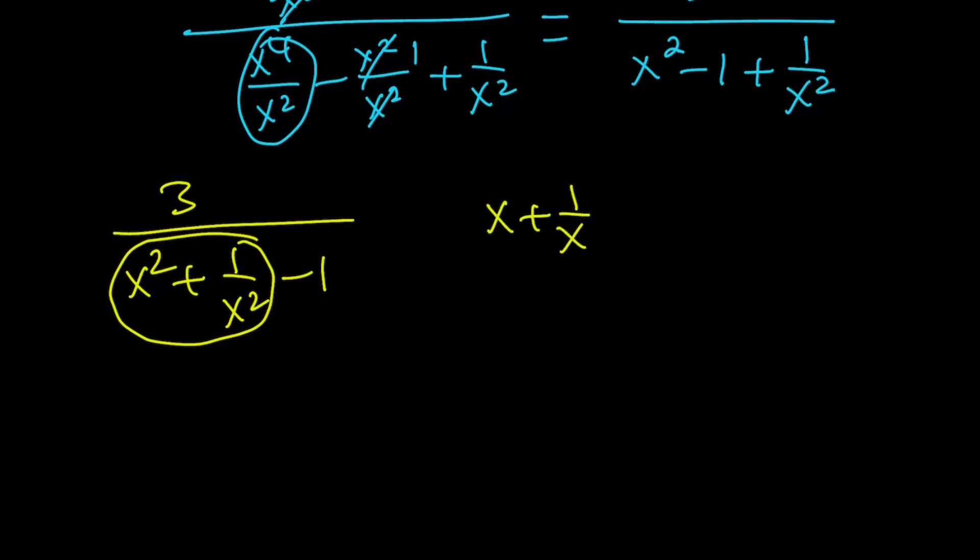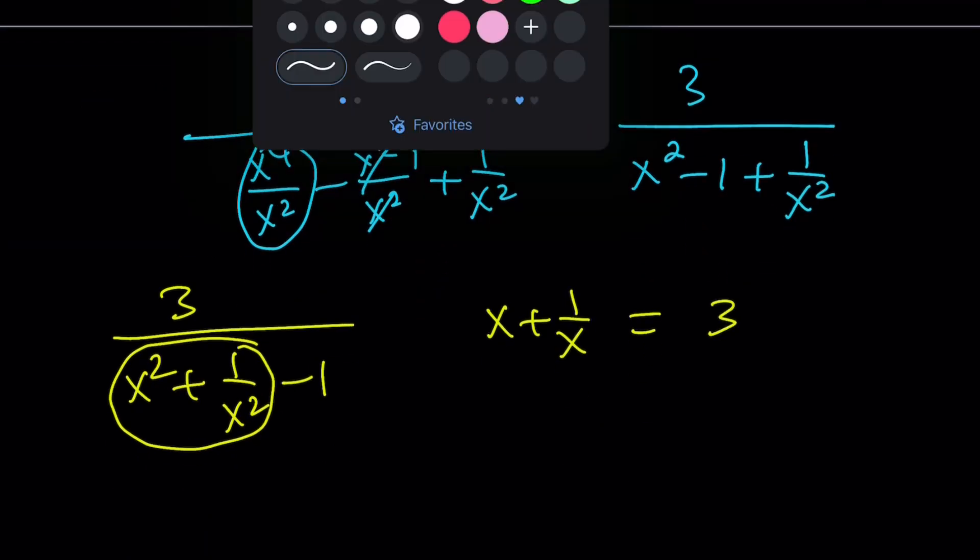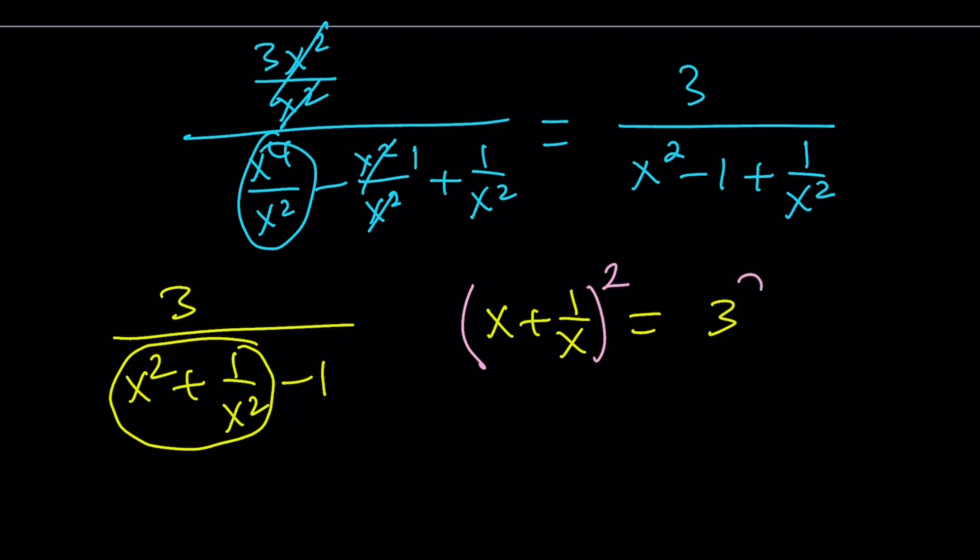Since we know that x plus 1 over x is equal to 3, it's given in the problem, we can go ahead and square both sides. And that's going to give us the following. x squared plus 1 over x squared. Yes, I do the a squared plus b squared first, which is nice. And then plus 2ab, which is 2, equals 9. And guess what? We got the value of x squared plus 1 over x squared.